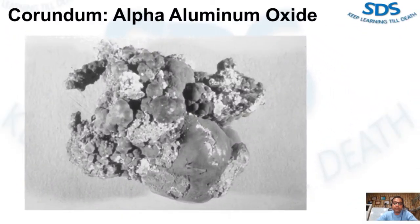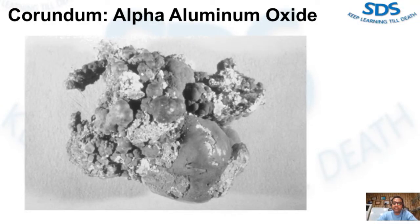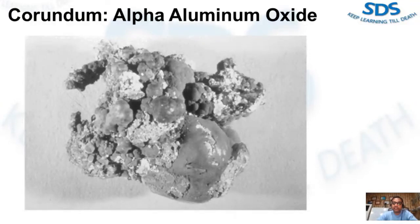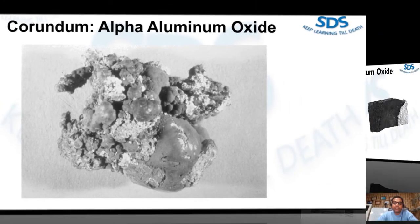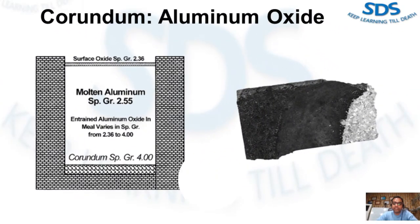Corundum is a refractory product which poses considerable problems for the die caster. Corundum is a very hard, very dense form of aluminum oxide. If it makes its way into the die casting, it will cause hard spots, creating machining difficulty, tool breakage, and poor strength properties in the casting. This image shows a chunk of corundum, which is alpha aluminum oxide. This form of aluminum oxide is very heavy and sinks to the bottom of the furnace.